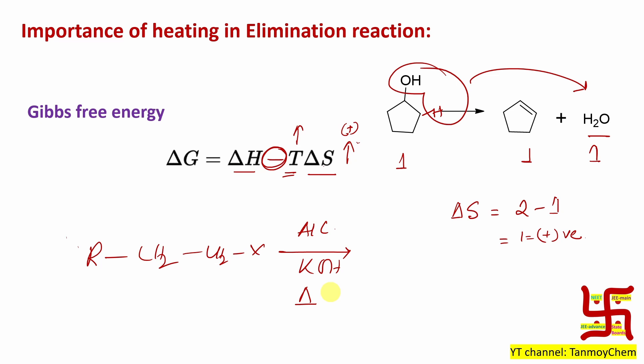Because from one molecule here you get two molecules: R-CH=CH2 plus HX. Actually not HX, KX plus H2O. So here what happened? Two molecules. So you may consider one and two here, and here KX plus H2O, so three molecules. Again ΔS is plus one that case also.